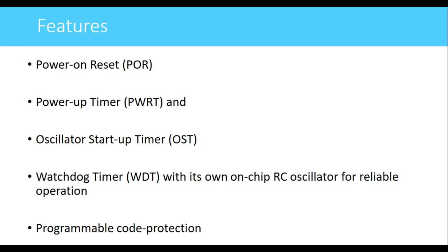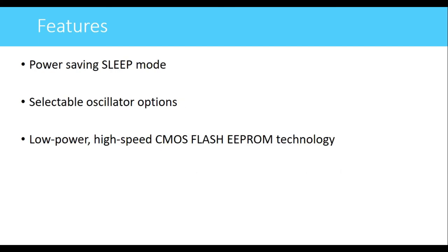There is programmable code memory protection, which allows the program memory to be protected so that nobody can read the code stored there — both read and write permissions are disabled for the protected code memory. Additionally, the microcontroller has a power-saving sleep mode: when the CPU is not performing any work, it can be put into sleep mode to reduce power consumption.